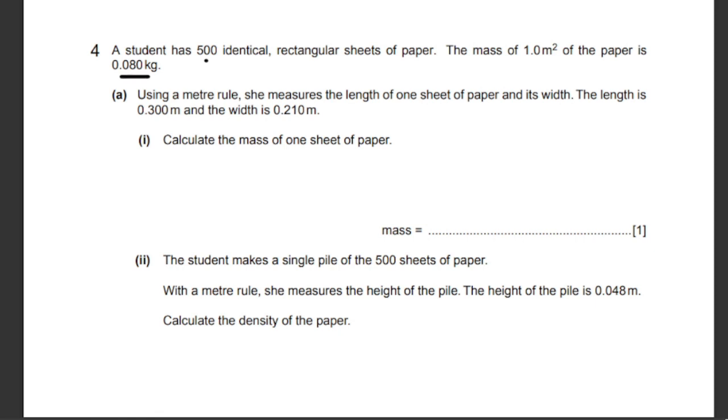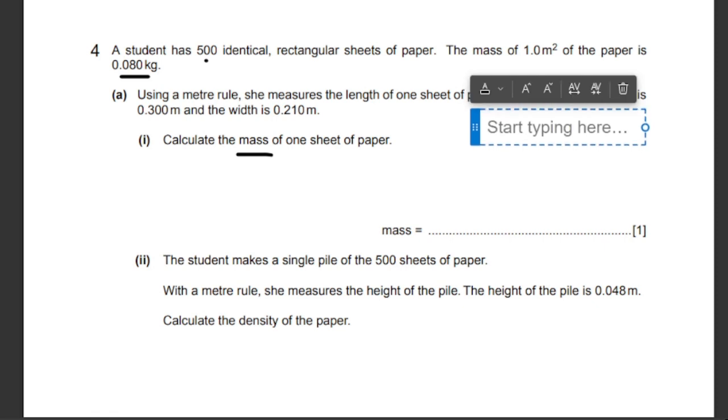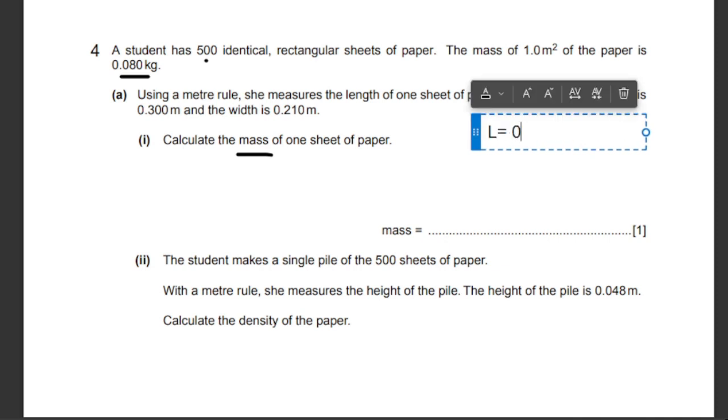Using a meter rule, she measures the length of one sheet of paper and its width. The length is 0.300 meters and the width is 0.210 meters. Let's calculate the mass of one sheet of paper. Let's start off by typing the quantities that we have regarding the paper. We have a length of 0.3 meters, a width of 0.210 meters. Thus, we can calculate the area. Length times width, which is 0.3 times 0.210.